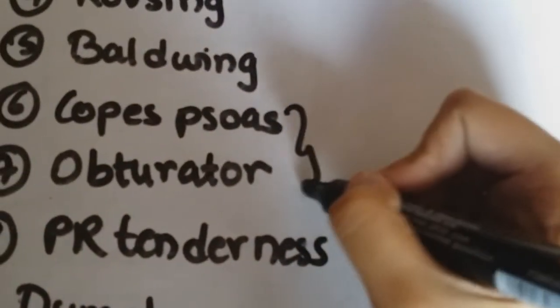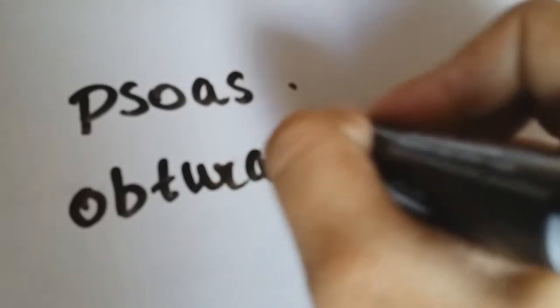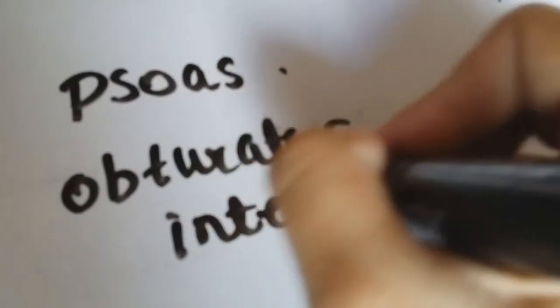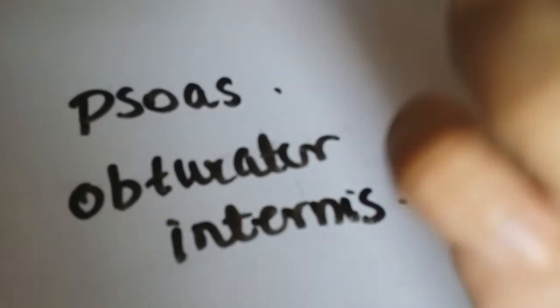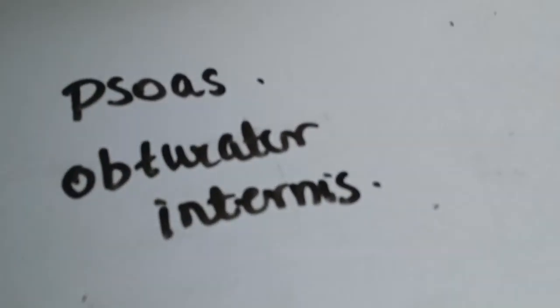The two other tests are Cope's psoas test and the obturator test. In the psoas test, hyperextension of the leg causes pain. In the obturator test, internal rotation of the hip joint causes pain due to irritation of the obturator internus muscle. These two signs are elicited because of irritation of the underlying muscles.